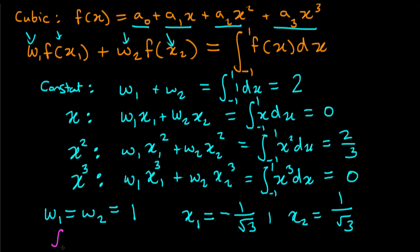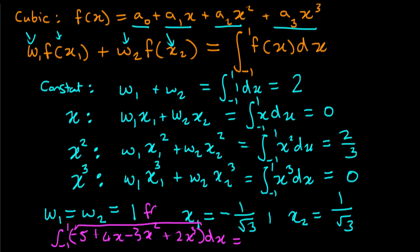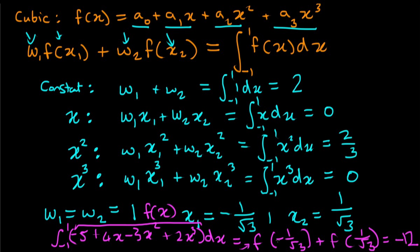For example, the integral from minus one to one of minus five plus four x minus three x² plus two x³ dx can be worked out exactly using our rule. With weights of one, this equals f(minus one over root three) plus f(one over root three). Plugging in those values gives an answer of minus twelve — we've done just two calculations. A pretty neat result.